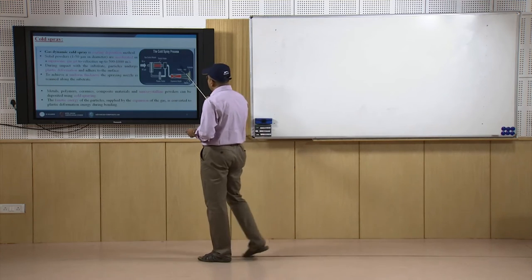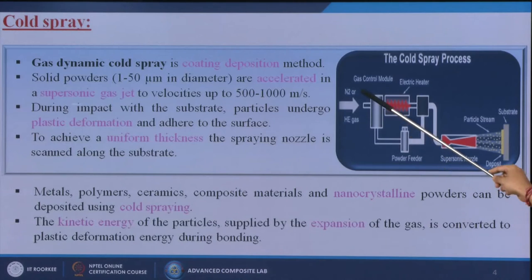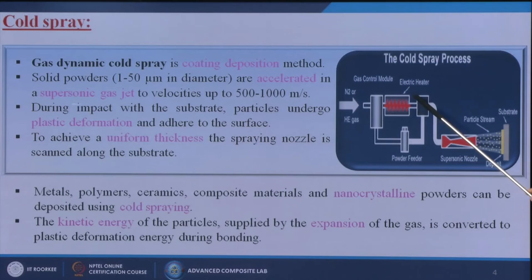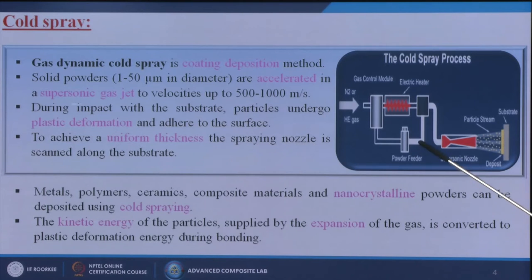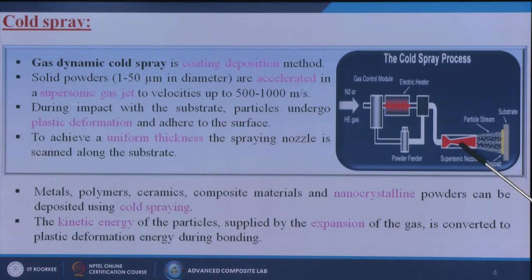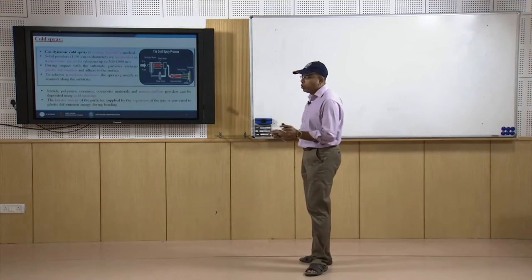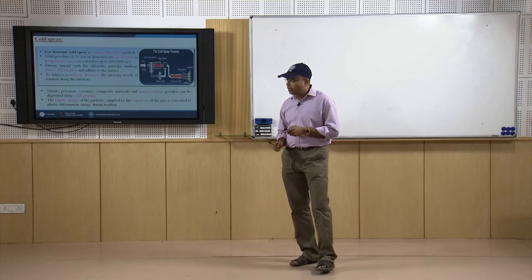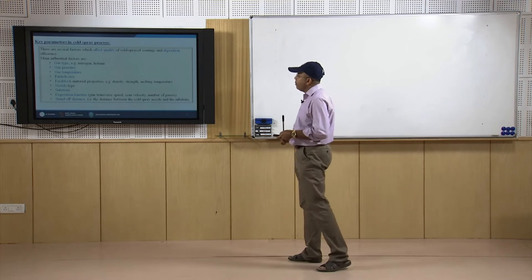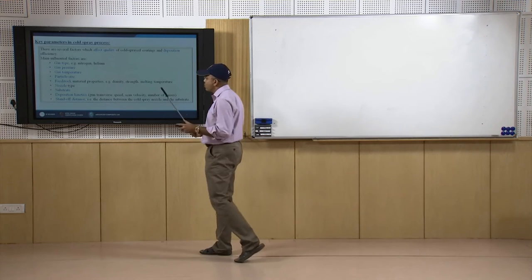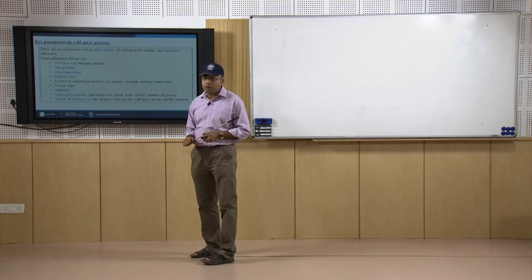Here is the schematic diagram: we put nitrogen or helium gas inside the chamber, then there is an electric heater so that the gas is slightly heated up. We put the coating materials as powder, which mixes with the gas in the chamber. Then through a supersonic nozzle, the mixture comes out and hits the substrate at very high velocity. This is the basic principle of this particular technique.